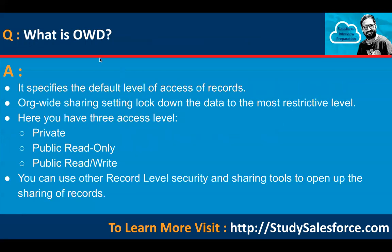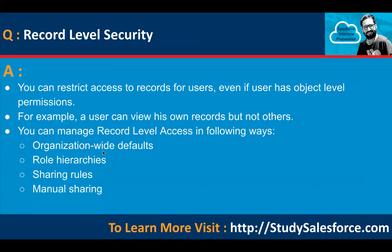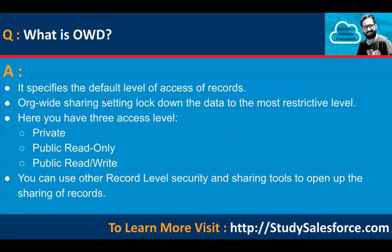What is OWD? OWD stands for organization-wide defaults. It specifies the default level of access to a record. Org-wide sharing settings lock down the data to the most restrictive level. There are three access levels: private, public read-only, and public read-write. You can then use other record-level security and sharing tools to open up the sharing of records.